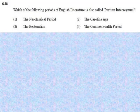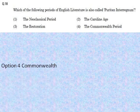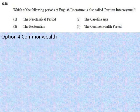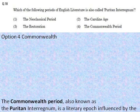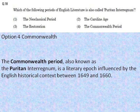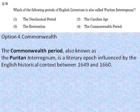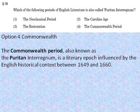Which of the following periods of English literature is also called the Puritan Interregnum? The Commonwealth period, also known as the Puritan Interregnum, is the correct answer — option 4. It is a literary epoch influenced by English historical context between 1649 and 1660. The Commonwealth was the political structure during that period when England and Wales, along with Ireland and Scotland, were governed as a republic after the end of the Second English Civil War and the trial and execution of Charles I.